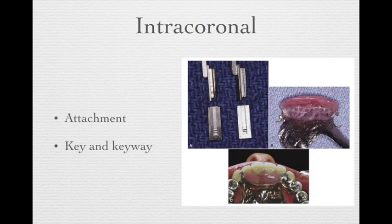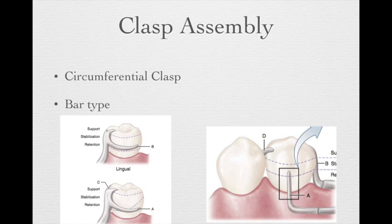The intracoronal attachment works like a key and keyway — it's very rigid and provides good retention. However, due to technique sensitivity and cost, it's rarely used nowadays. The clasp assembly is what we use most of the time for removable partial dentures. It includes two types: the circumferential clasp and the bar type.